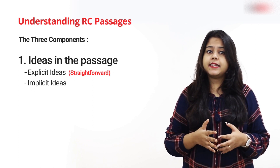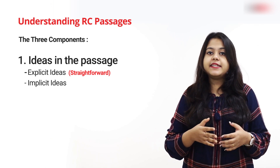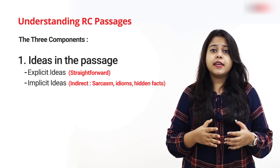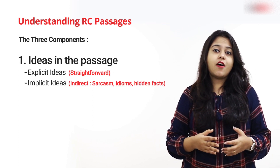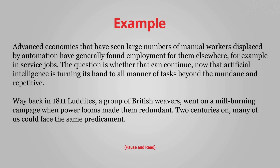Next up are implicit main ideas. They are more subtle in nature, hiding their true meaning behind layered language and indirect statements. These characteristically use techniques such as idioms, hidden facts, or sarcasm to convey their context. For example, read the given passage and find out the main idea. Here, the author does not say forthright what his main argument is. Instead, he describes the situation and provides an example to convey the predicament.